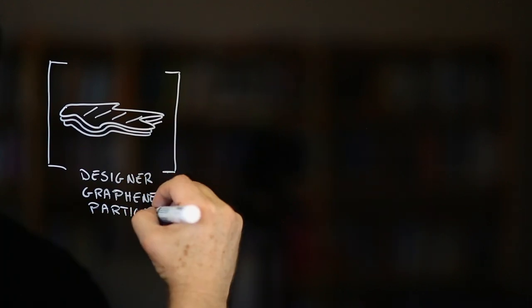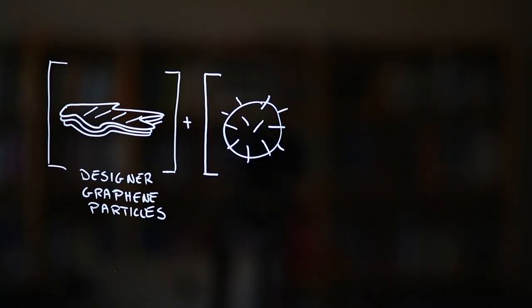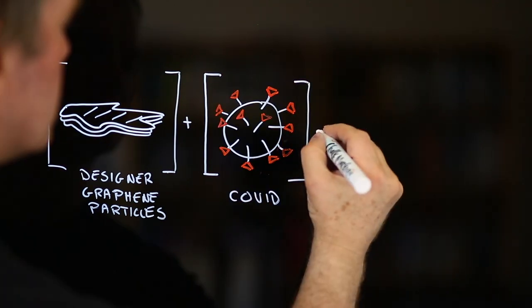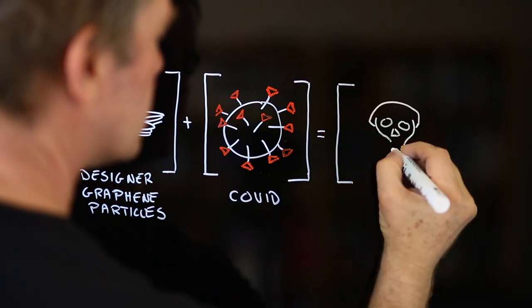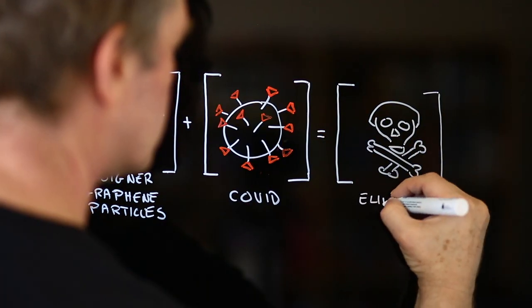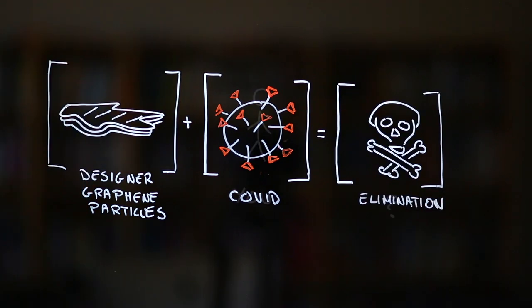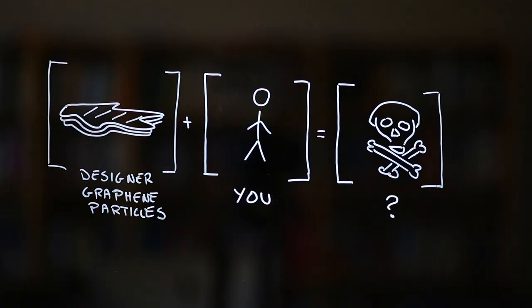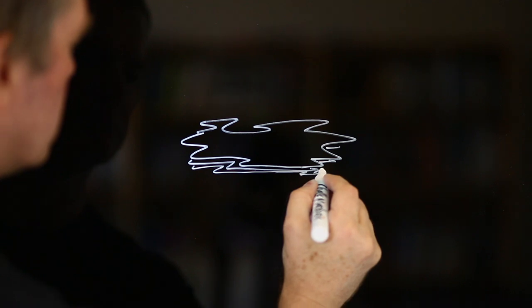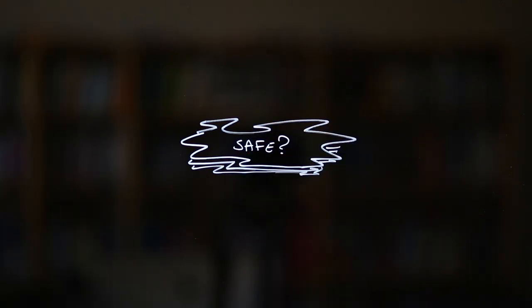For instance, graphene can kill viruses and bacteria that come into contact with it if it's designed in the right way. The scientific jury is still out on this one, in part because there are so many ways of tweaking graphene that it's hard to pin down whether a particular form of it will be safe or not.